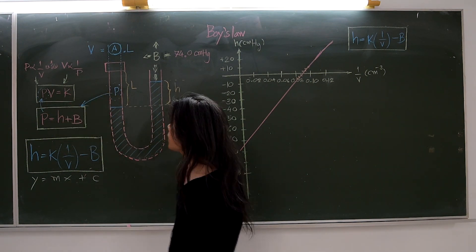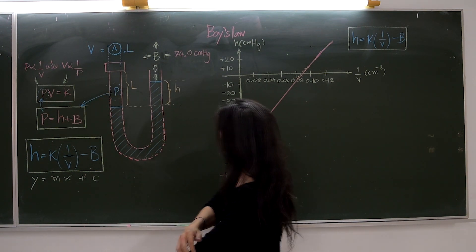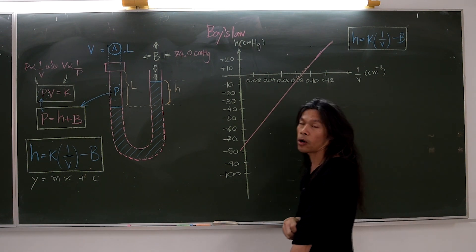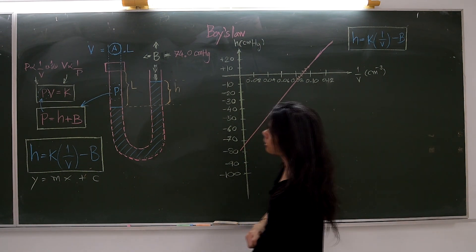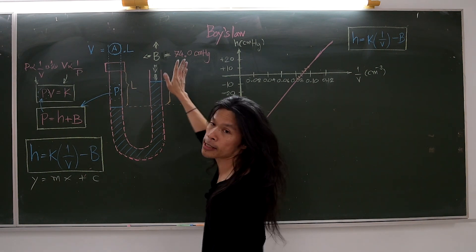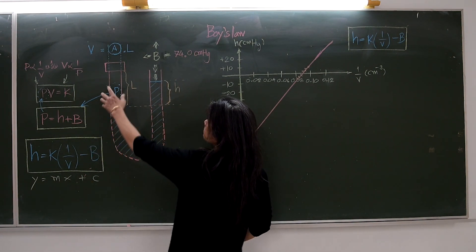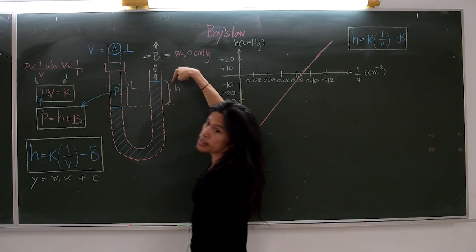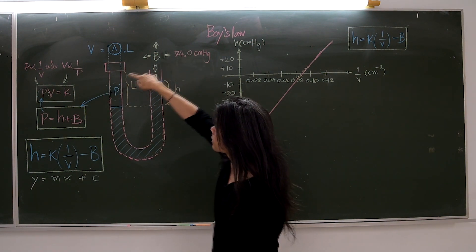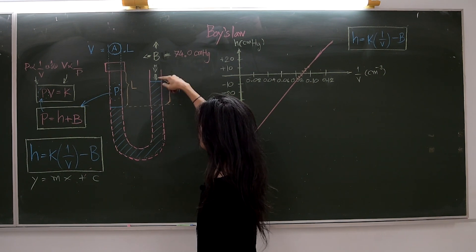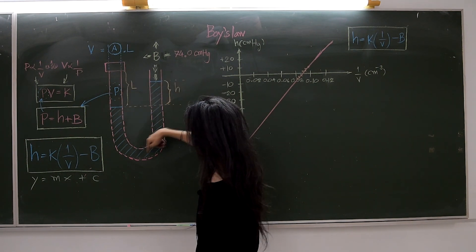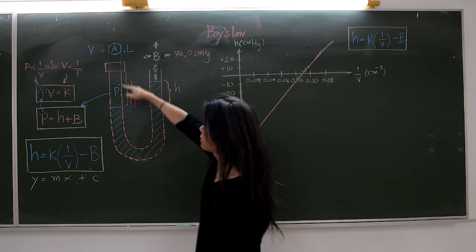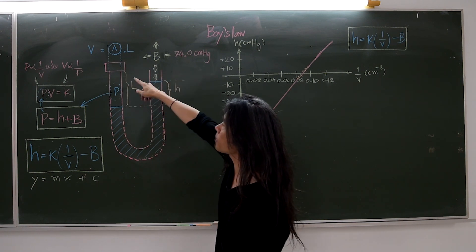We will use this concept to study the experiment of Boyle's law, which consists mainly of a U-shaped glass tube. On one side is a close-ended tube, on the right side is an open-ended tube. Both sides are connected by the U-shaped glass tube. Inside the tube is filled with mercury, which helps us study the effect of pressure and volume.